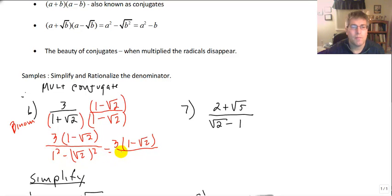All over negative 1, or if you will, negative 3 times the quantity 1 minus radical 2 all over 1. So that is just our final answer, the one circled in black.